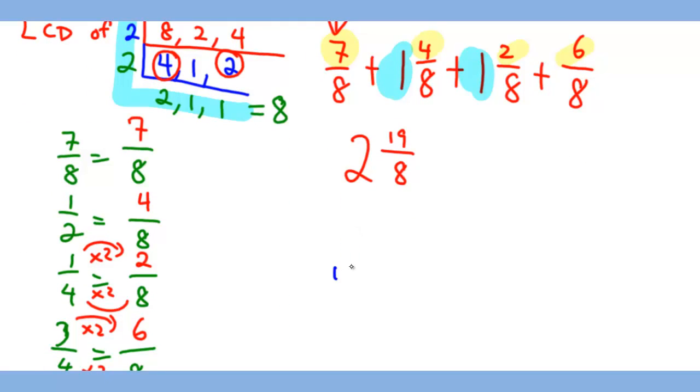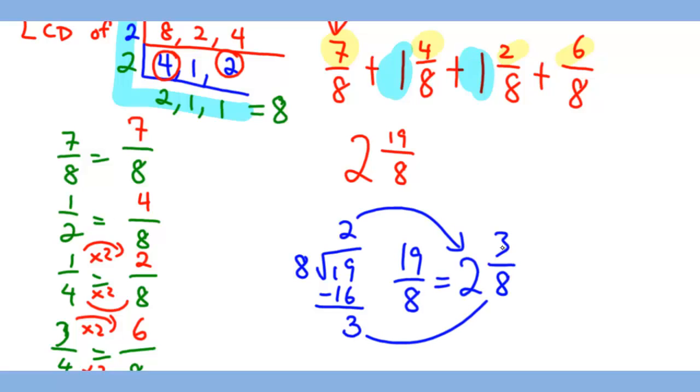So we have to do 19 divided by 8. 8 goes into 19 twice and that will take away 16 from 19, which leaves us 3 as the remainder. That means 19/8 also equals 2 whole from here and 3/8 from the remainder.